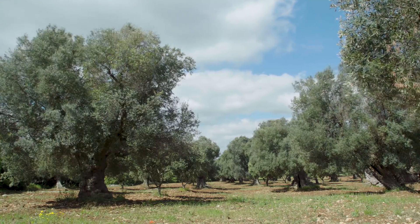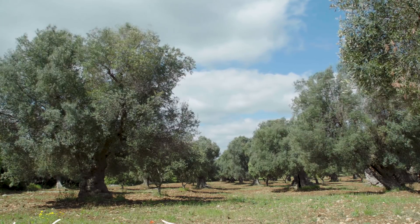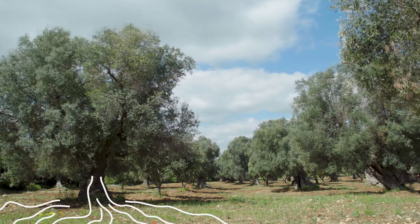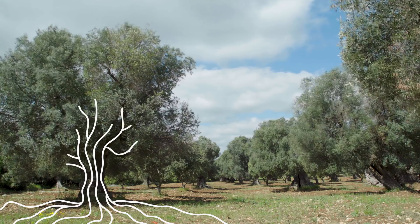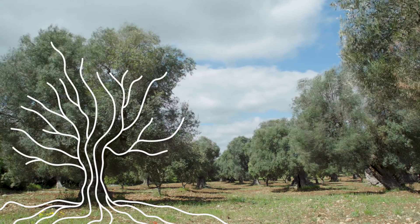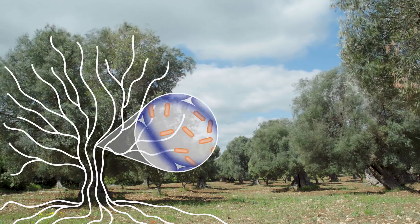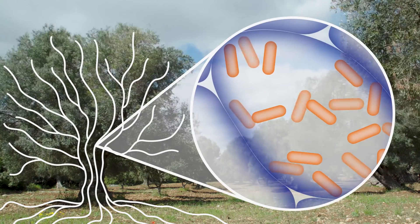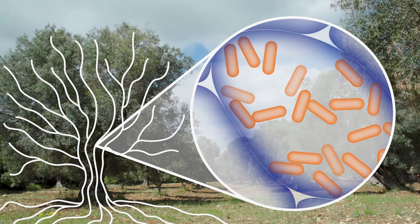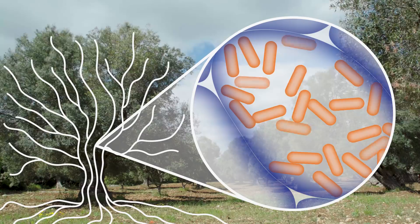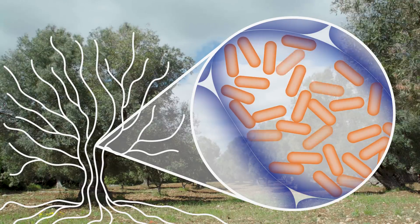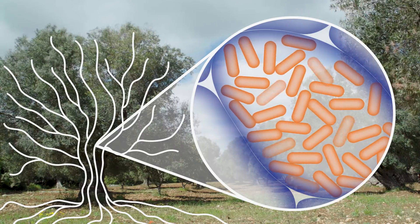The Xylella bacterium grows in a plant's water-carrying arteries known as xylem. The bacteria multiply and clog the arteries, starving the plant of water and nutrients.